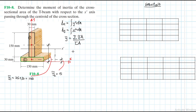Let's find the area. The area for part one will be equal to — and they've got the same dimensions — so area for part two is also equal to L times B, which is 30 by 150. Therefore, area one equals area two, which is 4500, or 4.5 times 10 to the power 3.